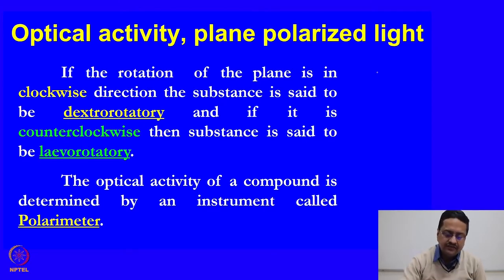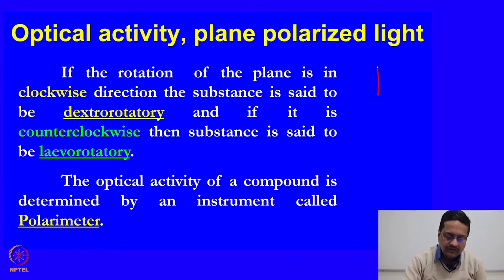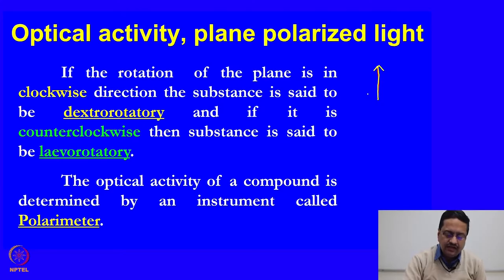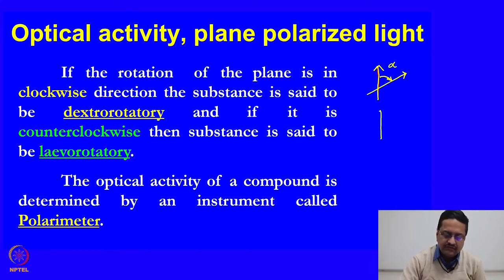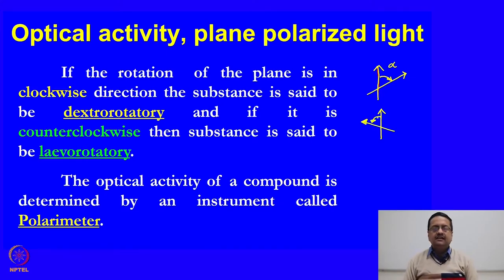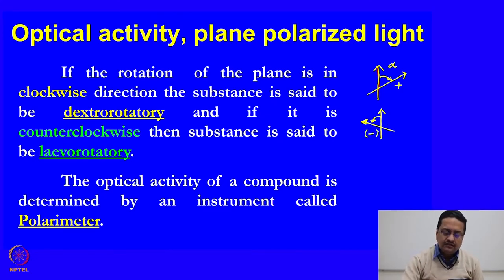If the rotation is counterclockwise then the substance is said to be levorotatory. That means if the plane of the incident radiation was in one direction and the rotated plane is in another direction rotating clockwise by angle alpha, this is called the dextrorotatory sample. If the plane rotates in the anticlockwise direction then we call it a levorotatory sample. By convention, dextrorotatory is termed as plus rotation and levorotatory as minus rotation.